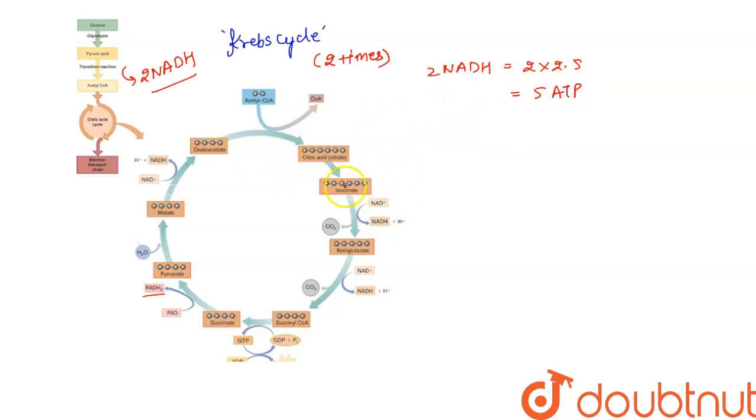And from here, through this Krebs cycle, we are going to get 6 NADH, 2 FADH2, and 2 ATPs. That will be equal to 6 times 2.5, which equals 15 ATPs.